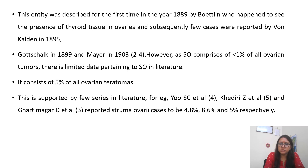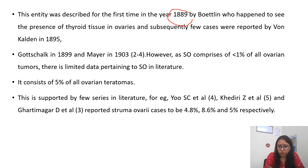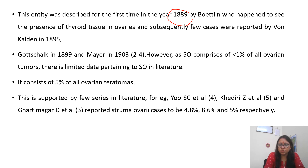This entity was first discovered in 1889 by Boynton, who reported suppression of thyroid tissue in ovaries. Subsequently, few cases were reported by Von Kahlden in 1895, Gottschalk in 1899, and Mayer in 1903. Struma ovarii comprises less than 1% of total ovarian tumors, and there is limited data in the literature. Supporting data has been reported by Yue SC et al., Khedri et al., and Gati Magadi et al.